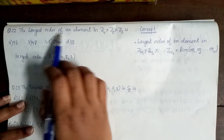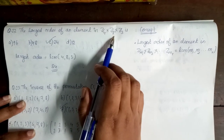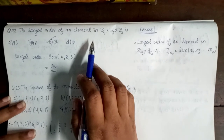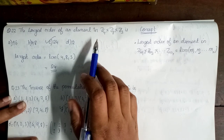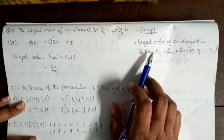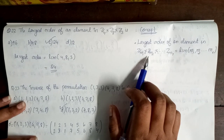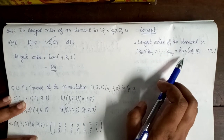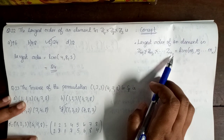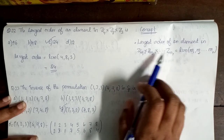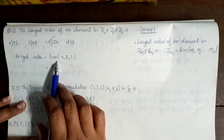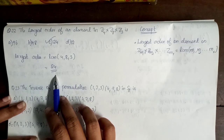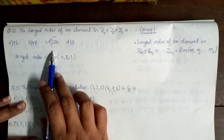The largest order of an element in Z4 cross Z8 cross Z3. This is the largest order of an element, which is the least common multiple of 4, 8, and 3. So that is 24. So option C is correct.